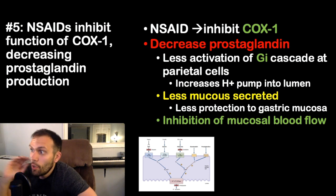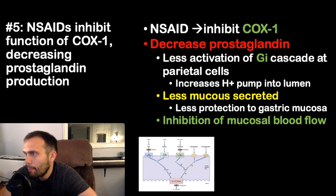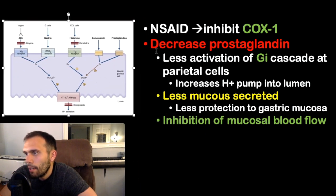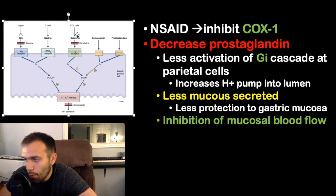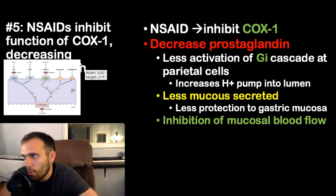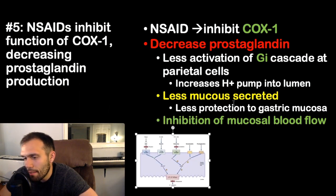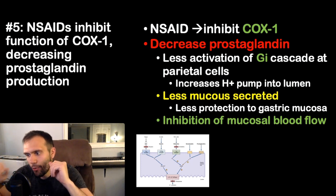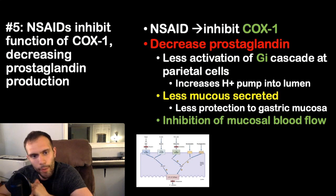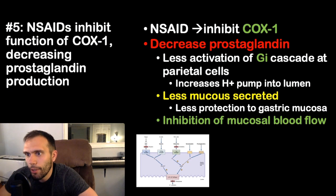Fact five: NSAIDs inhibit COX-1, decreasing prostaglandin (PGE2) production. Normally, prostaglandins activate the GI inhibitory cascade, inhibiting cAMP in parietal cells. Without prostaglandins, there is less inhibitory pressure on cAMP, so more acid is secreted. Additionally, there is decreased mucosal blood flow and less mucus secretion, reducing gastric mucosal protection. A patient on chronic NSAIDs for pain is predisposed to gastritis and ulcers.